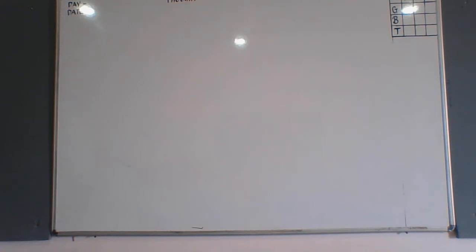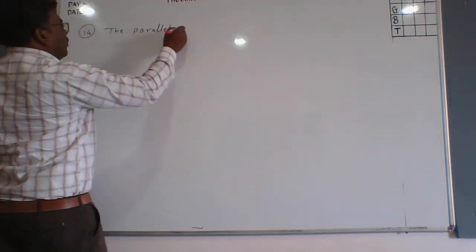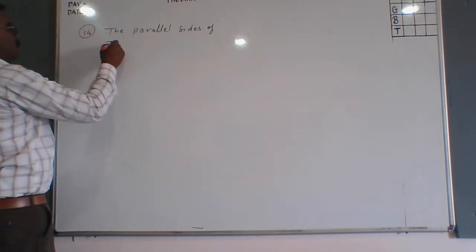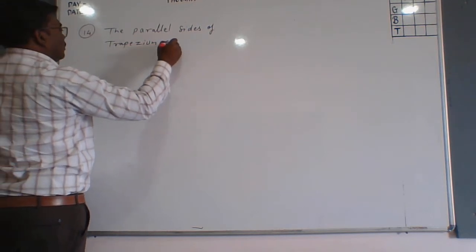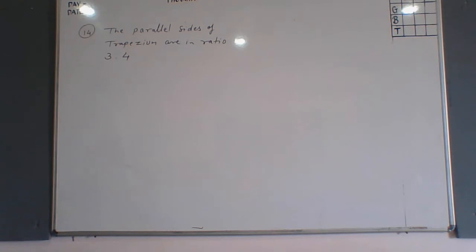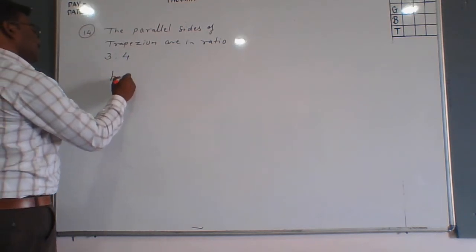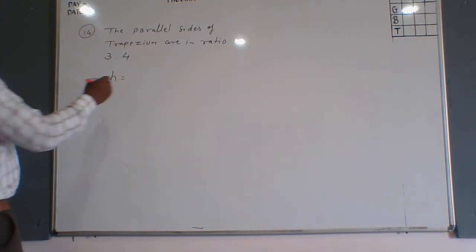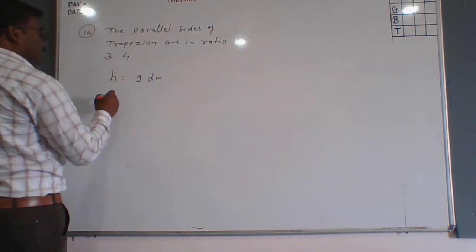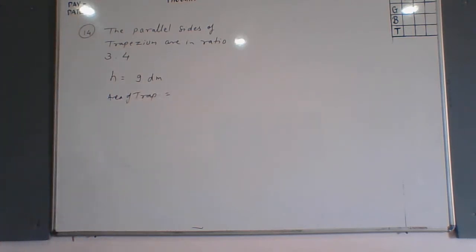The given information: parallel sides of the trapezium are in ratio 3 is to 4. The distance between the parallel sides — that means the height — is given as 9 dm, and the area of the trapezium is 126 dm square.